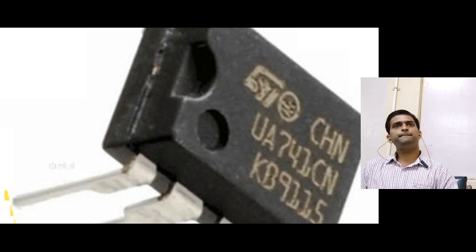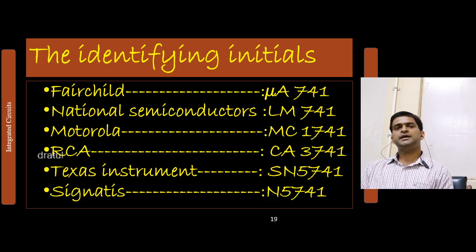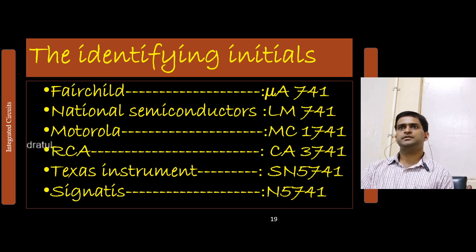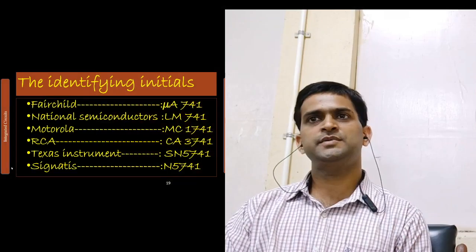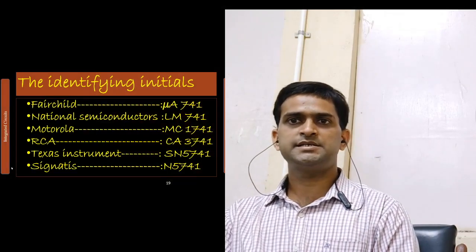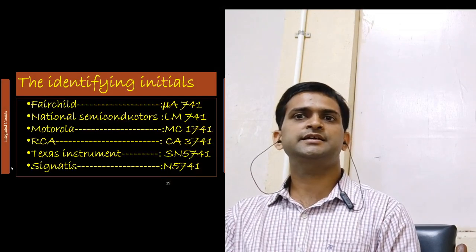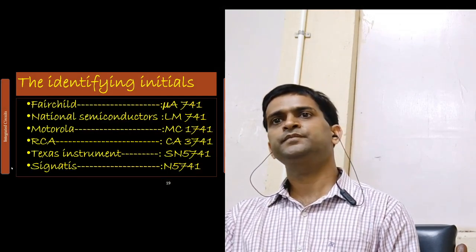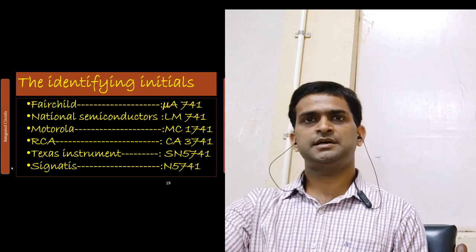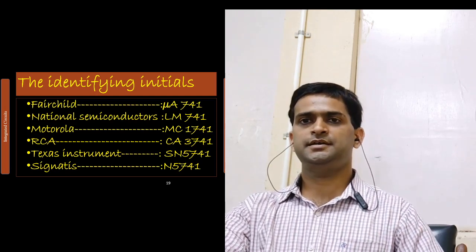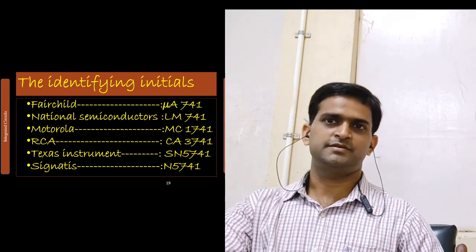If there is LM, then we can understand that the IC is manufactured by National Semiconductor. If there is MC, then it is Motorola. CA for RCA. Texas Instruments comes with the initial letters SN. In Signetic IC, it comes with the N5. So, this is how we identify any integrated circuit manufacturer.